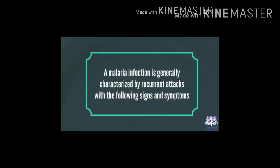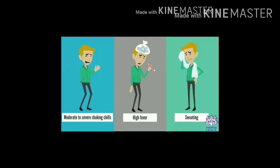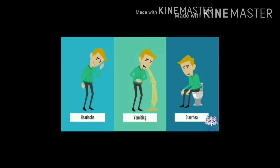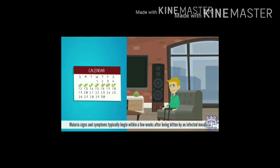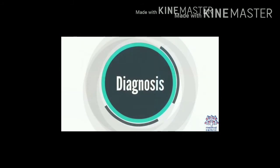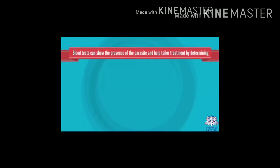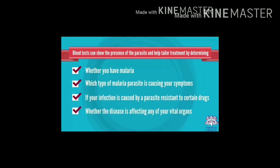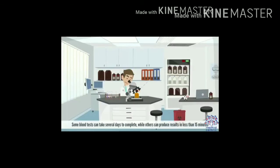Signs and symptoms of malaria include recurrent attacks with moderate to severe shaking chills, high fever, and sweating. Other symptoms include headache, vomiting, and diarrhea. Symptoms typically begin within a few weeks after being bitten, though some parasite types can lie dormant for up to a year. Blood tests show the parasite and help determine species, severity, and drug resistance.